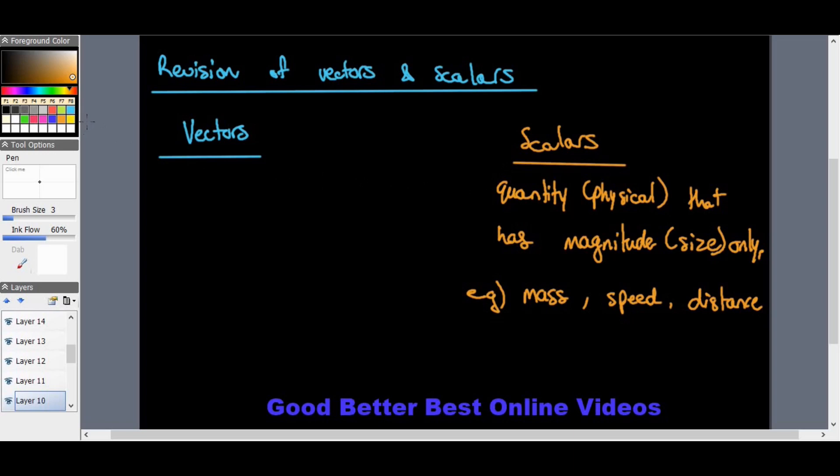A vector is also a physical quantity, but it has magnitude and direction.